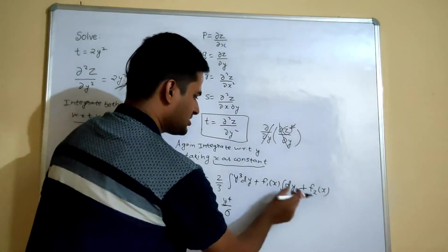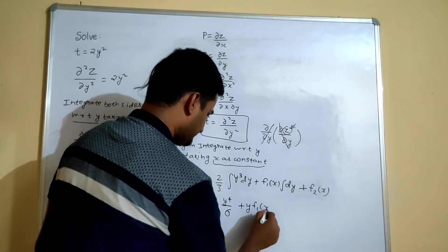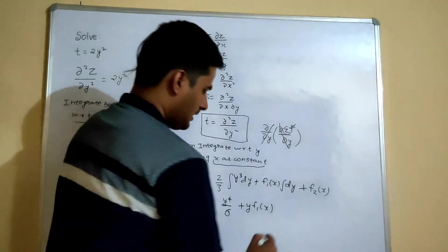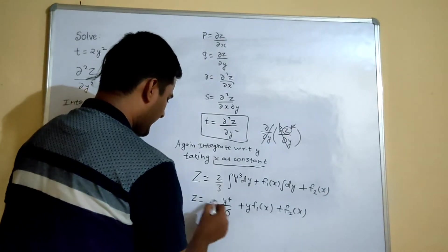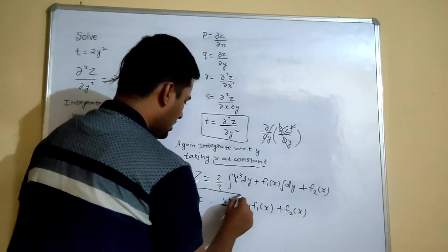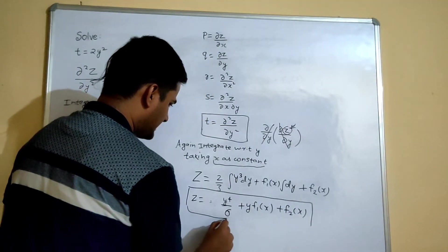From here integration of dy is y. So y times f1(x) and plus simply your f2(x). So this becomes your final answer: Z equals to y power 4 by 6 plus y times f1(x) plus f2(x).